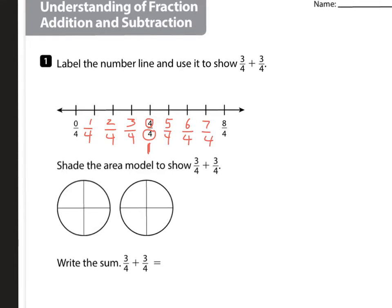Alright, and then we want to add 3 fourths. So 1, 2, 3 fourths, plus 3 fourths. So 6 fourths would be our correct sum.